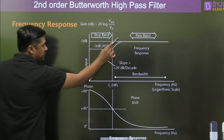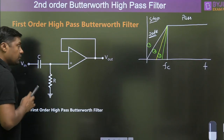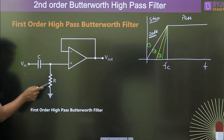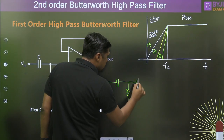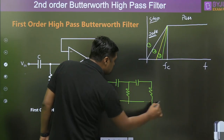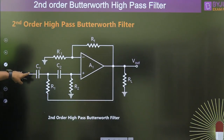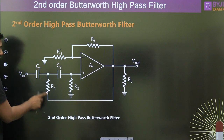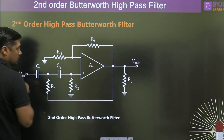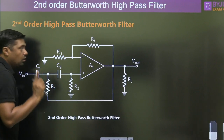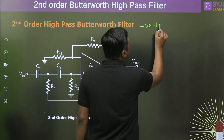For the second order, the slope will be 40 dB per decade, but we have to use an extra R and C. This is the second order high pass Butterworth filter: C1, R1, C2, R2. Always remember there is negative feedback here — this is the negative feedback. There is also a positive feedback path, but always remember the negative feedback is dominant.